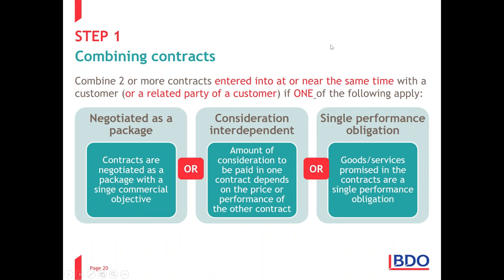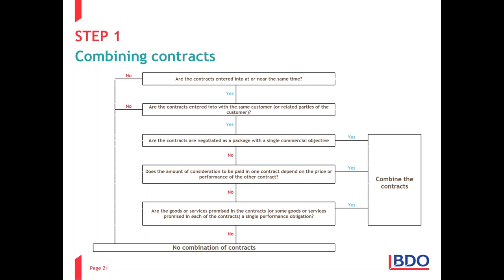Converting this to a decision tree for combining contracts: Are the contracts entered into at or near the same time? Yes. Are they with the same customer or related parties? Yes. If you answer yes to both, then if you answer yes to any of the next three questions, you combine: Are the contracts negotiated as a package with a single objective? Does the amount in one contract depend on the price or performance in another? Is it a single performance obligation split across multiple contracts? If yes to any one of those, combine.